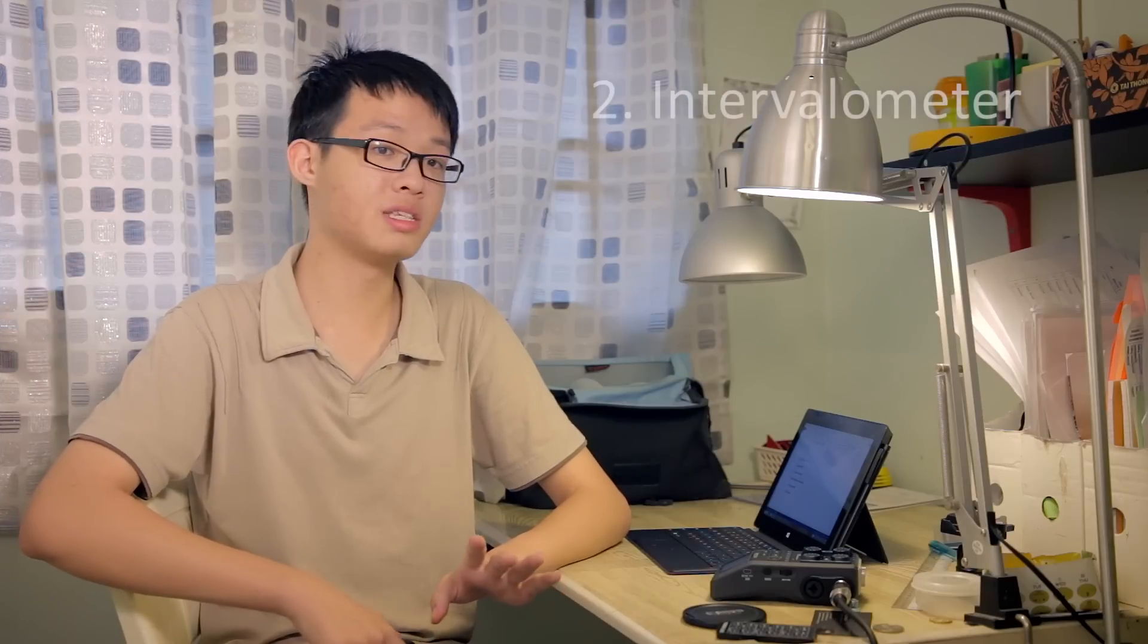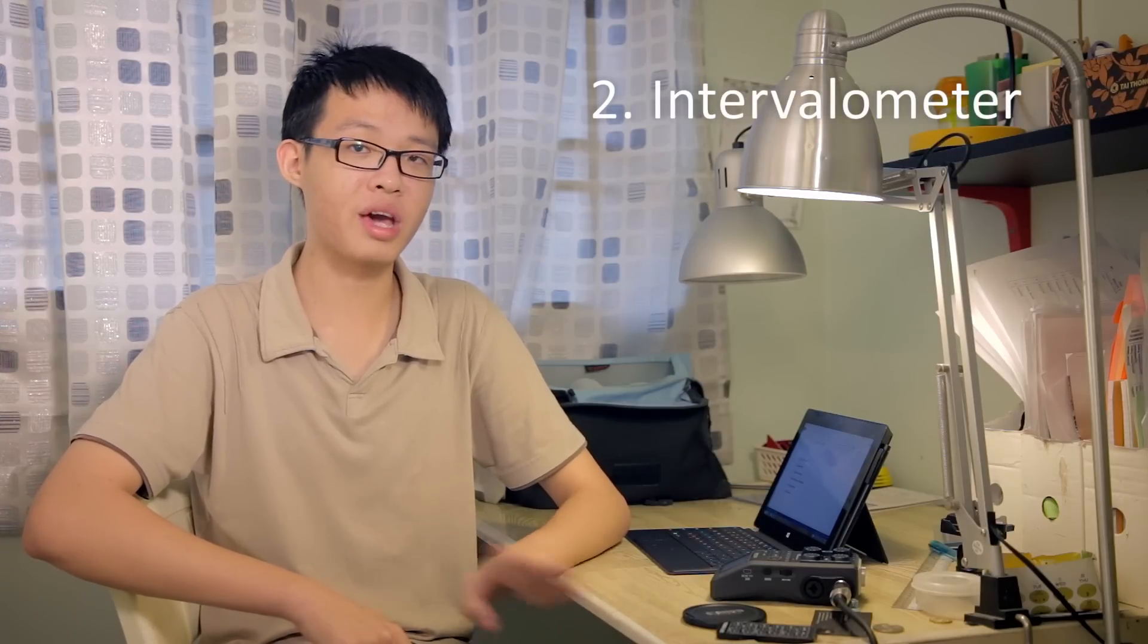At number two is the Intervalometer. Now, up to now, no Canon DSLRs ever have the Intervalometer function built in. You have to get the external Intervalometer shutter release except the 7D Mark II, which is very new and costs quite a lot.